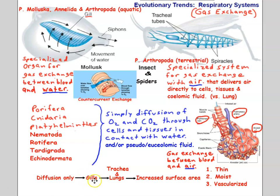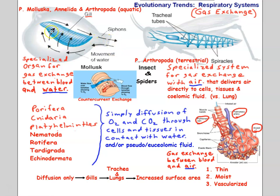The next step is the evolution of organs specialized just for gas exchange — gills. A gill exchanges gas between water and blood. This appears evolutionarily first in the mollusks, as seen in a clam where water circulates over gills, allowing oxygen absorption and carbon dioxide release into the blood. Water comes in bringing oxygen, the gills extract that oxygen into the blood, and carbon dioxide diffuses back out into the water.